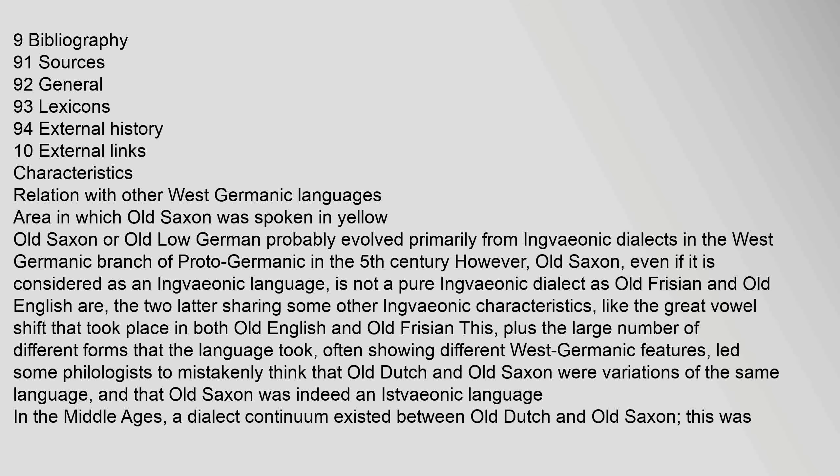Old Saxon, or Old Low German, probably evolved primarily from Ingvaeonic dialects in the West Germanic branch of Proto-Germanic in the 5th century. However, Old Saxon, even if it is considered an Ingvaeonic language, is not a pure Ingvaeonic dialect as Old Frisian and Old English are, the two latter sharing some other Ingvaeonic characteristics like the great vowel shift that took place in both Old English and Old Frisian. This, plus the large number of different forms that the language took, often showing different West Germanic features, led some philologists to mistakenly think that Old Dutch and Old Saxon were variations of the same language.